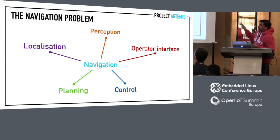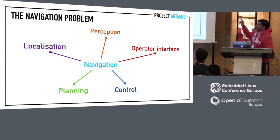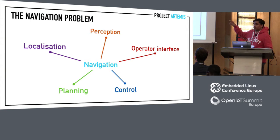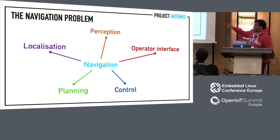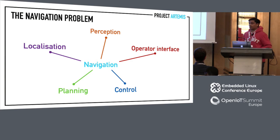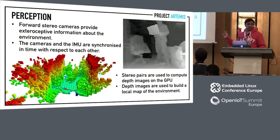Coming to the overview of the navigation problem: when we want to fly indoors or anywhere, several problems must be solved simultaneously. First, perception — observing the environment. Second, localization — knowing where we are. Third, planning — planning movements so we don't crash. Fourth, control — getting the vehicle to perform the planned maneuvers. And fifth, the operator interface — giving whoever is controlling it a clean interface.